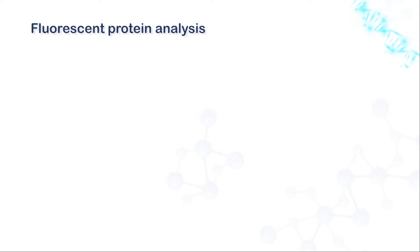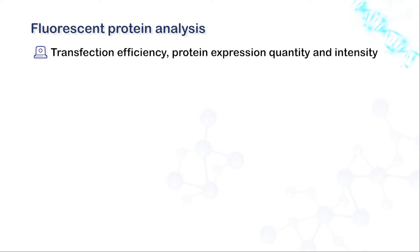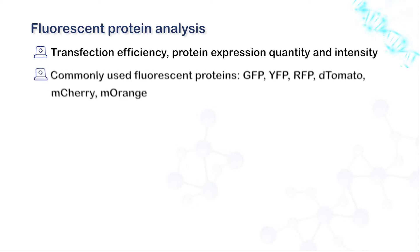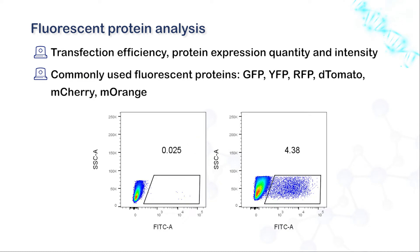In addition, there is fluorescent protein analysis. Flow cytometry is often used to detect transfection efficiency and protein expression. Unlike fluorescence microscopy, which requires manual counting under a microscopic field, flow allows rapid and quantitative detection of multiple fluorescent proteins and is easier for data statistics.